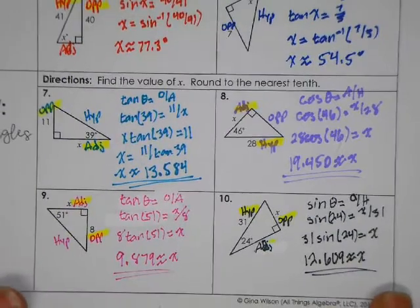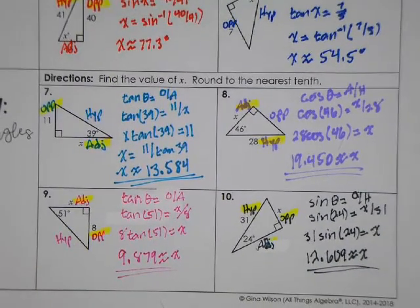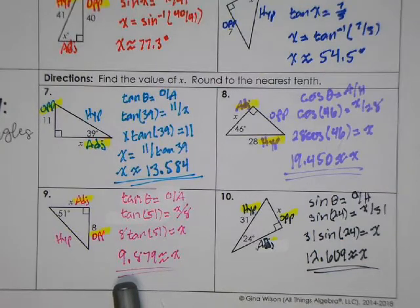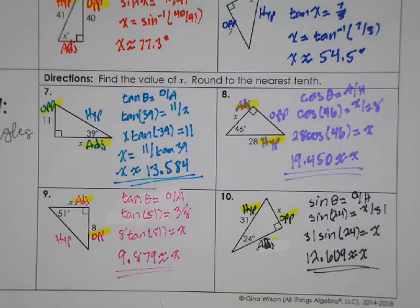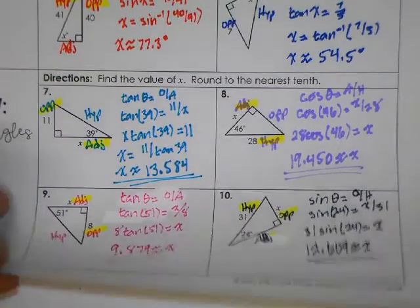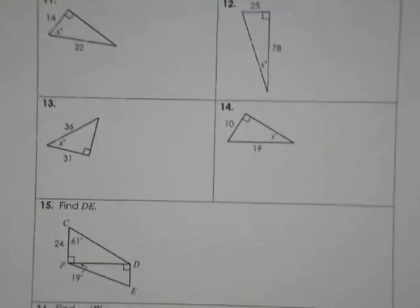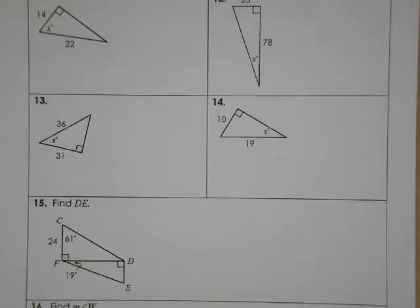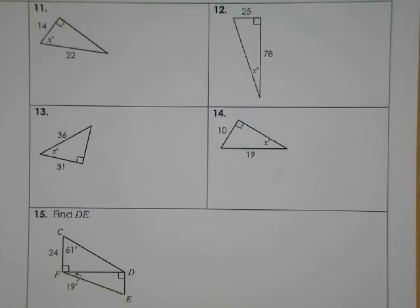Go ahead and pause and work out problems 9 and 10. When you're done, hit play to check your work. For the answers: I'm getting about 9.789 for the missing side on 9, and 12.609 for the missing side on 10. From here it's just more of the same — mixed practice.